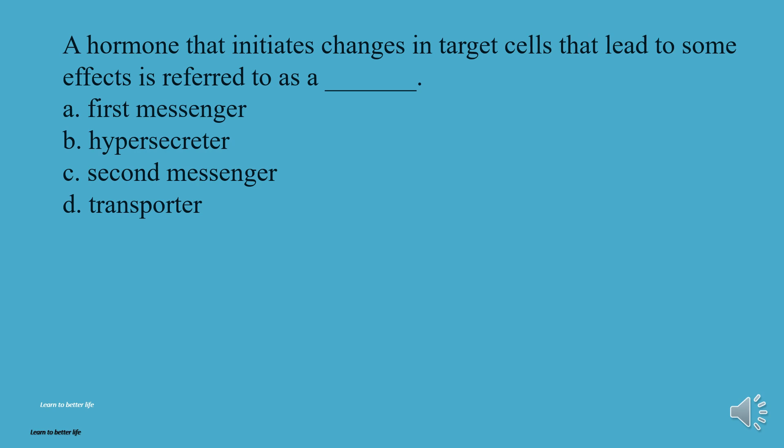A hormone that initiates changes in target cells that lead to some effects is referred to as a what? A, First messenger. B, Hypersecretor. C, Second messenger. D, Transporter. The answer is A, First messenger.